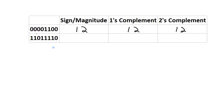However, the number 11011110 will not have the same value under the three different systems. The first bit is a 1, so in all three systems it will be a negative number, but the magnitude differs. In the sign-magnitude system, the first bit simply indicates it's negative, and the rest of the bits — 1011110 — have a magnitude of 94. So in sign-magnitude, the number is negative 94.